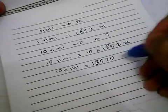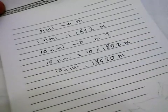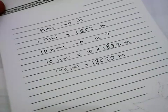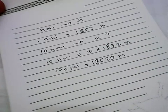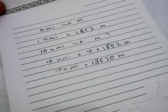Well, so 10 nautical miles is equal to 18,520 meters. Well, that's it, that's the result of our equation problem.